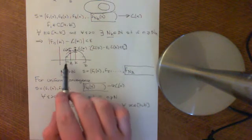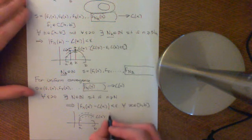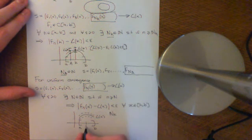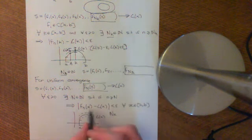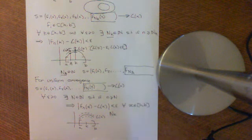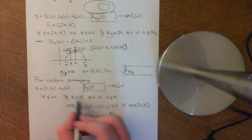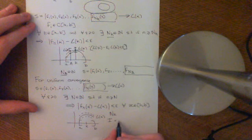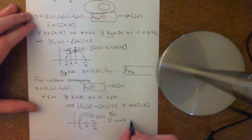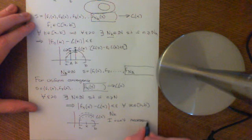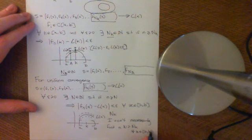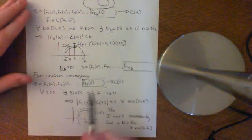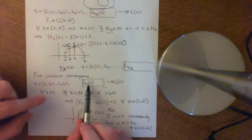For every individual point K in A,B, pointwise convergence tells me I can find some N_K such that this is true at the point K. The problem is: can I find a single N which is greater than N_K for all K in the interval A,B? That's what you would need to be true, because you'd need to go to a point in this sequence of functions such that after that point, all of this is true for all x in A,B. But I can't necessarily find such a bound.